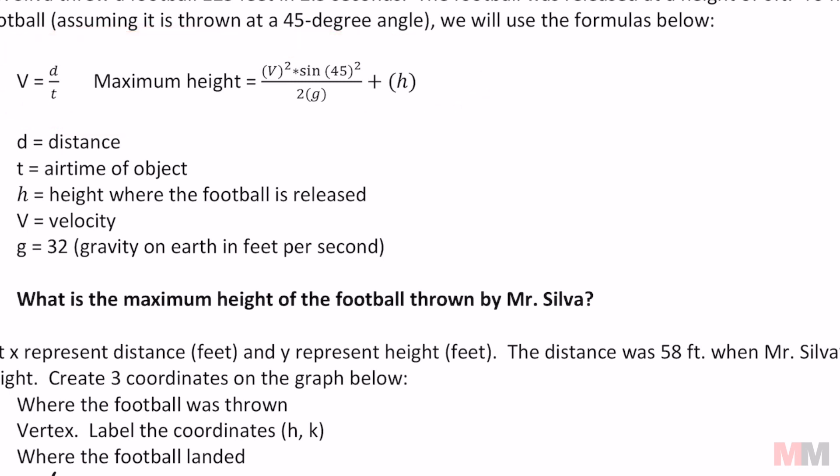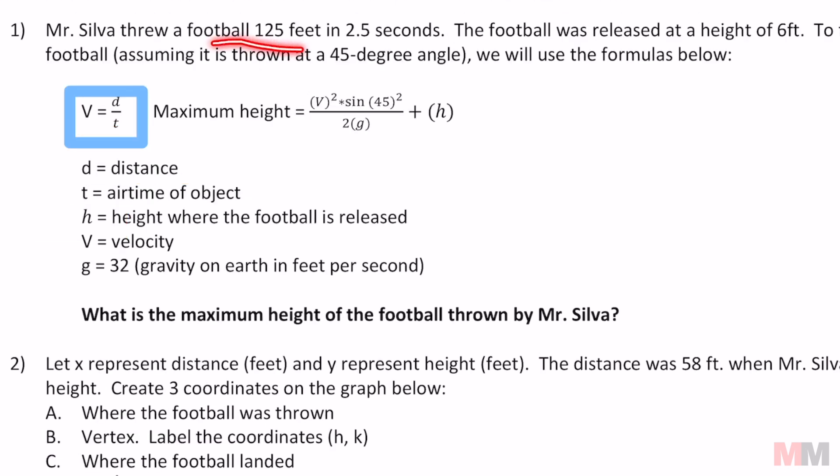A lot of crazy equations that look like that, but it's not that hard to do as long as you know how to read and search for numbers. We're gonna start off with this one right here and I'm gonna highlight it in blue. That is just the velocity equation: velocity equals distance over time. Both of those were included in the first question. My distance is 125 feet and that was thrown in 2.5 seconds. So we can write that as V equals 125 divided by 2.5, which equals 50 feet per second.